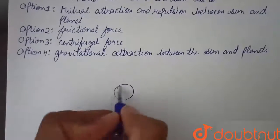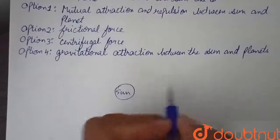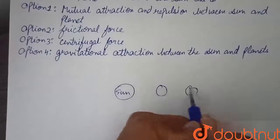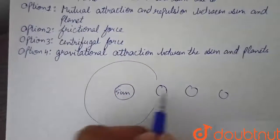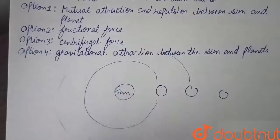So let us say this is sun and here are planets revolving around the sun in circular motion.